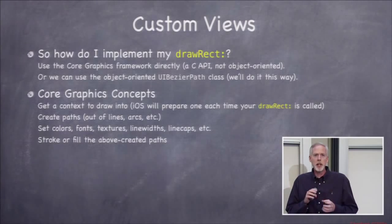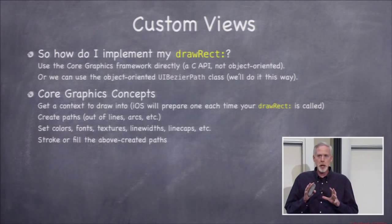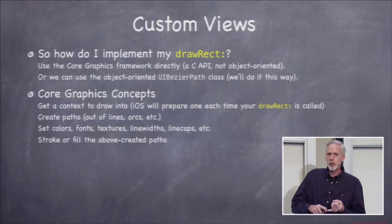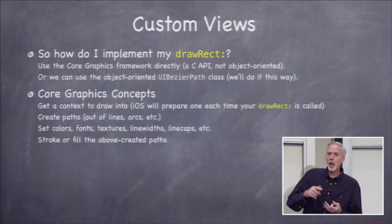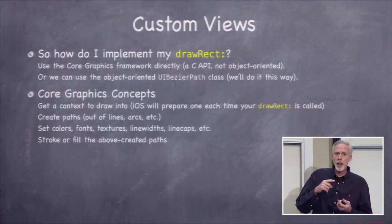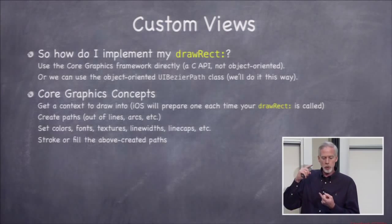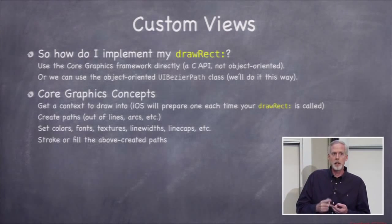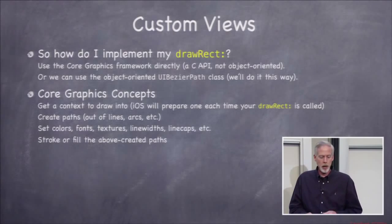To understand Core Graphics, you need to know its four-step process. First, you need a context to draw in. Second, you create paths — triangles, squares, rounded rects, whatever. Third, you set the colors, fonts, line widths, and so on. Fourth, you stroke or fill the paths you created. This is the fundamental way Core Graphics works.